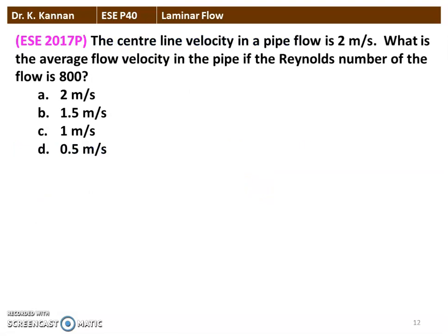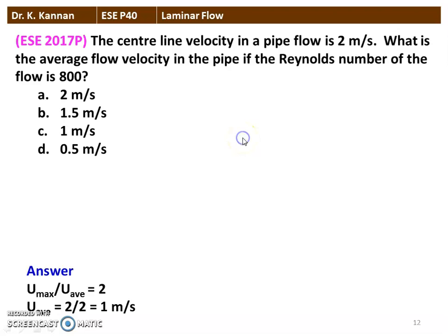The next question from the 2017 question paper: the centerline velocity in a pipe flow is 2 meters per second. What is the average flow velocity in the pipe if the Reynolds number is 800? For laminar pipe flow, U_max / U_average = 2. So U_average = U_max / 2 = 2 / 2 = 1 meter per second. The answer is option C, 1 meter per second.